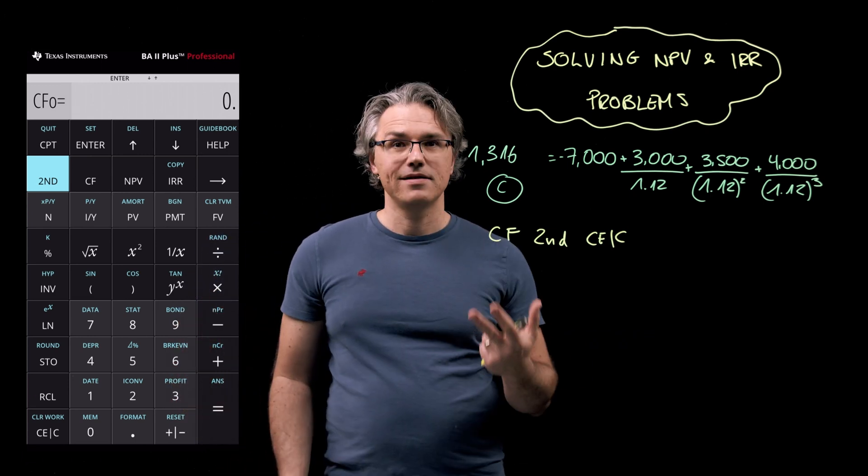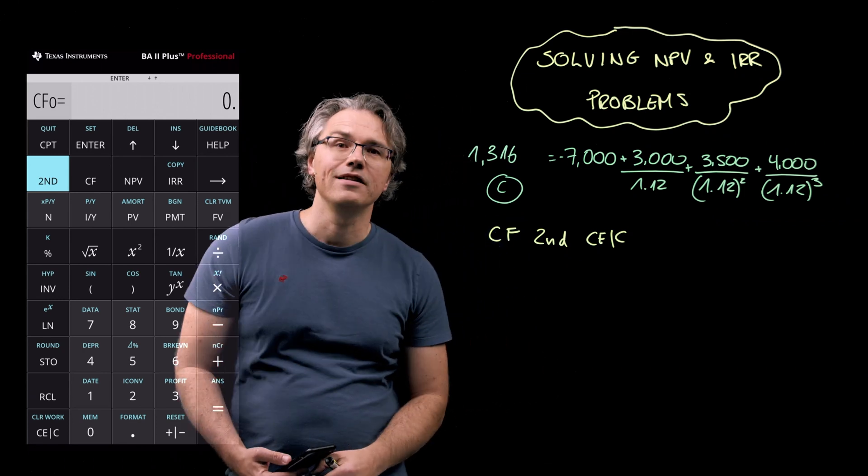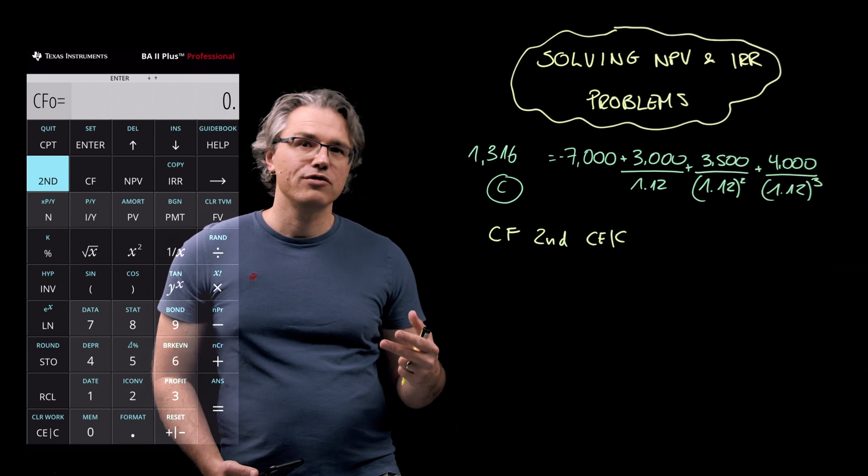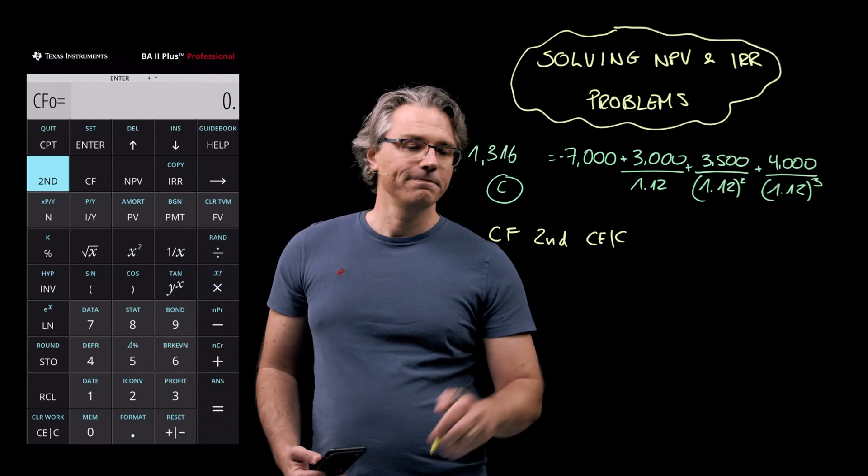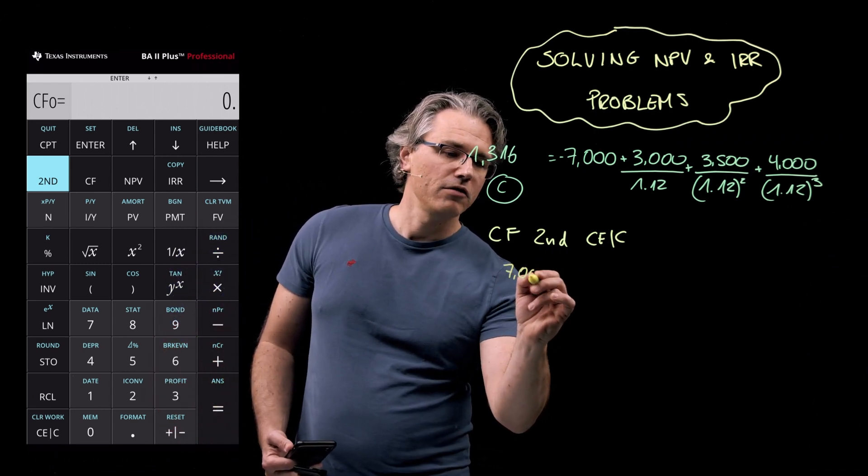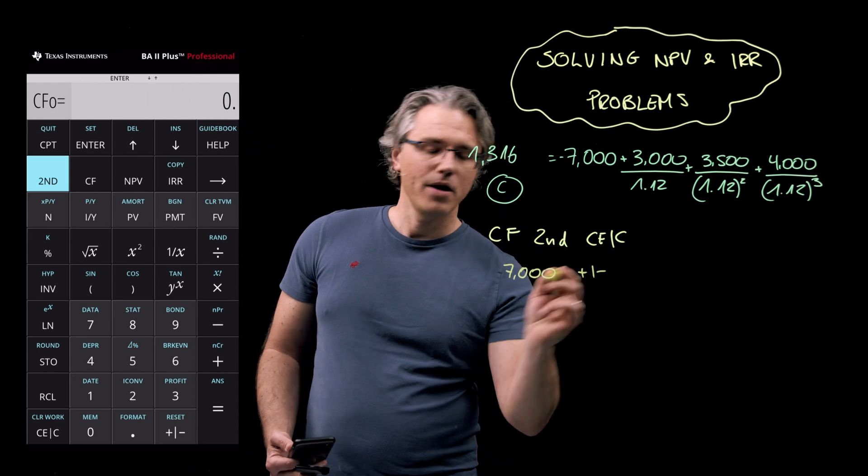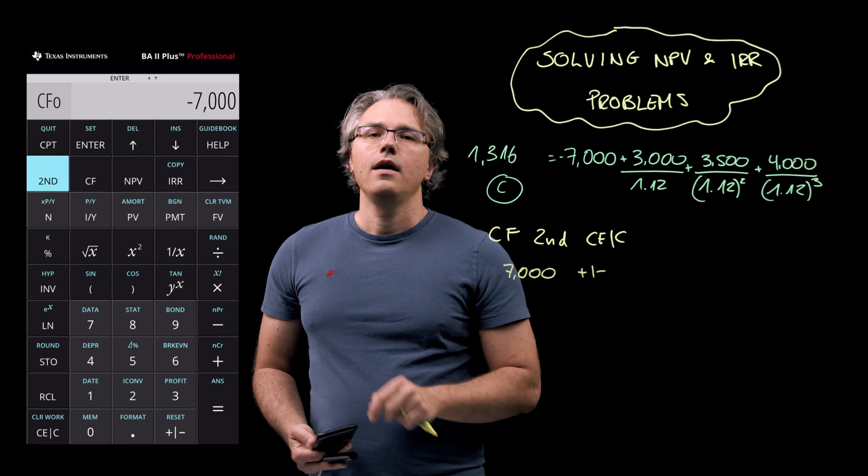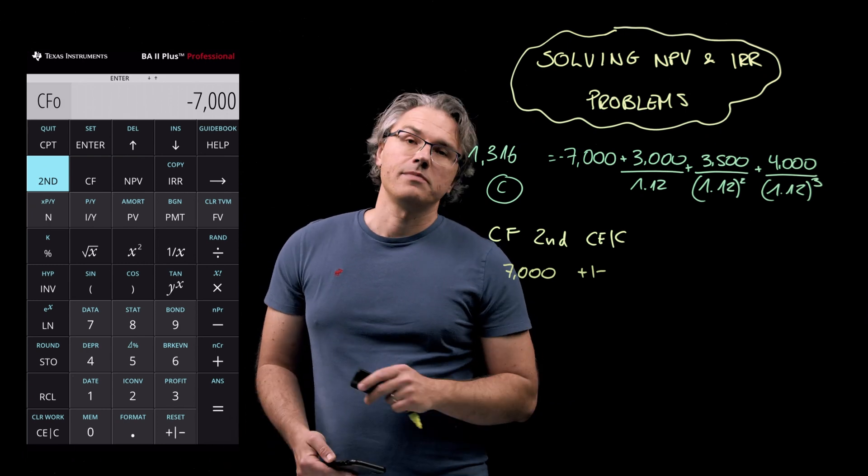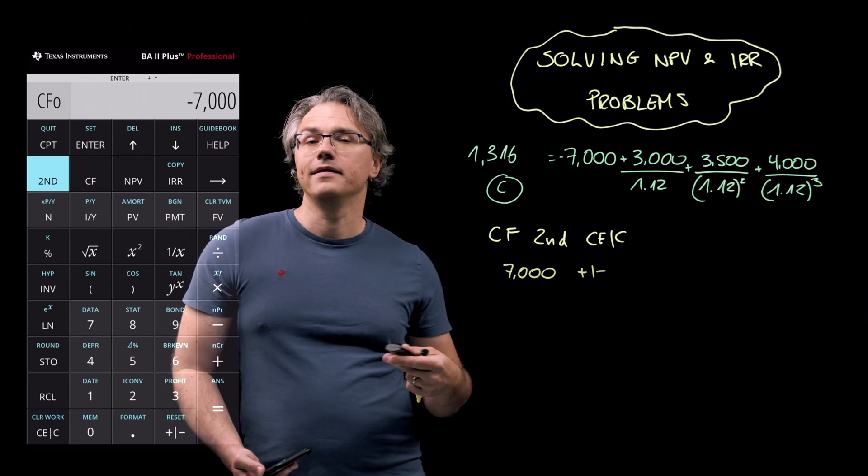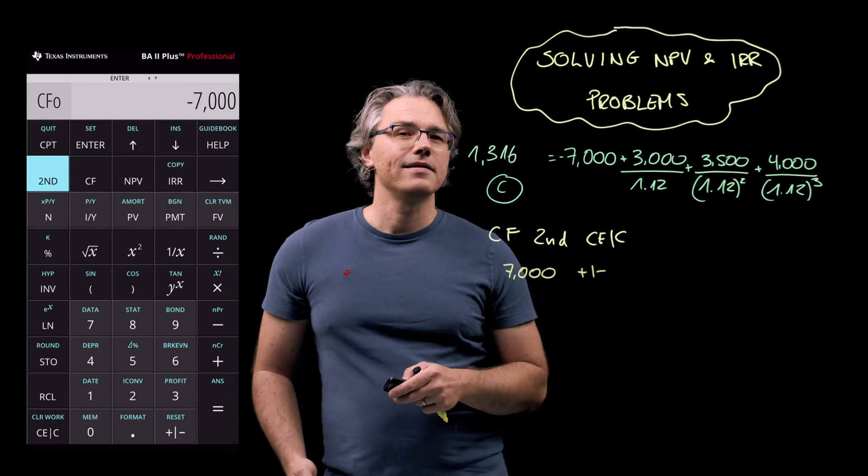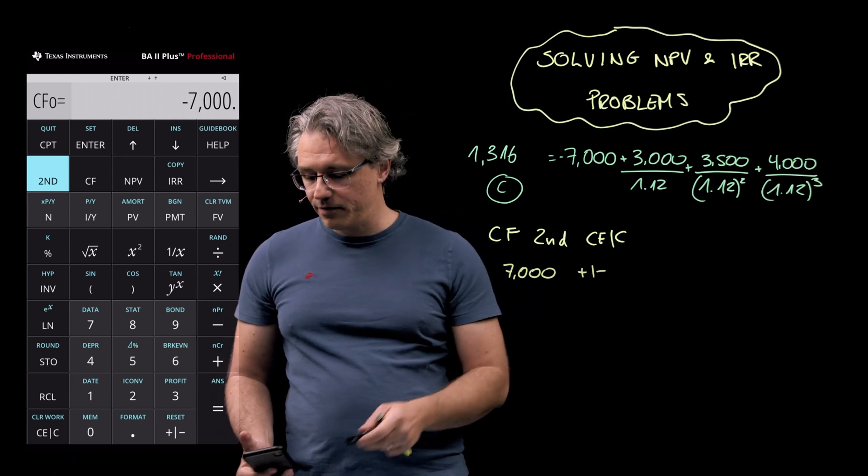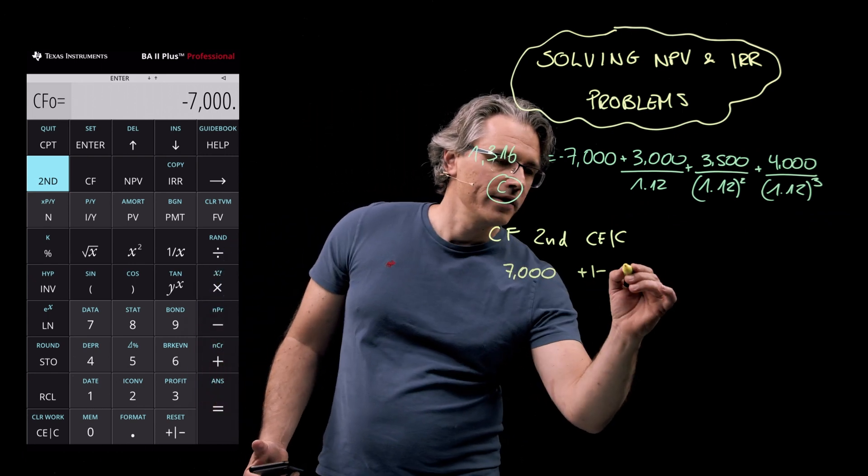The calculator now is displaying CF0 equal to 7000. We obviously want to change this to a negative 7000 as this is the initial cash outlay at the start of the project. So type in 7000 followed by the plus minus key and press, very critically, the enter key to confirm your input.